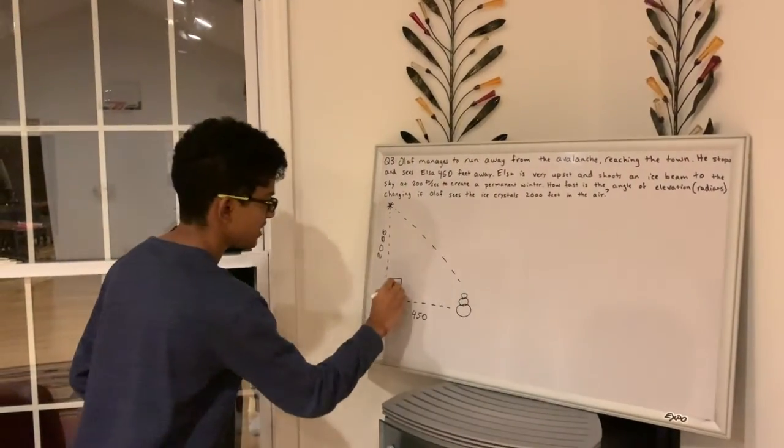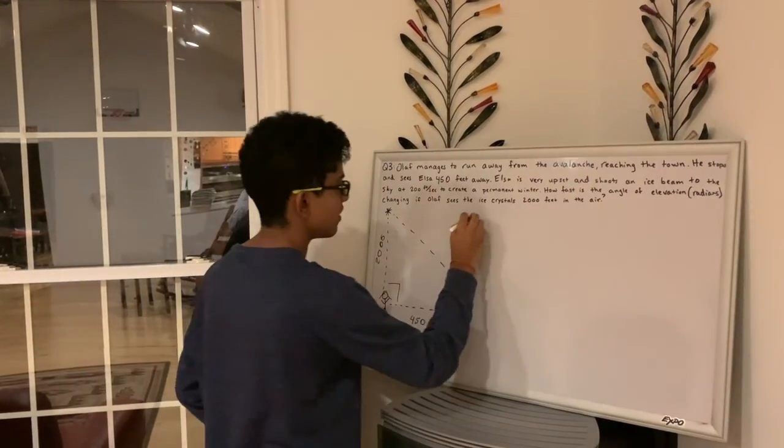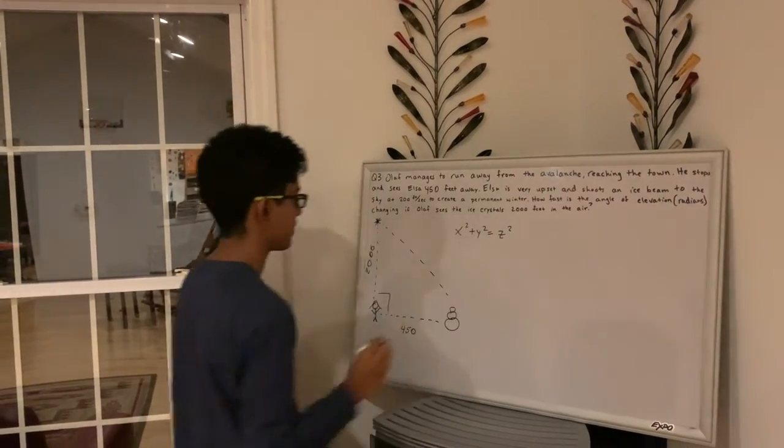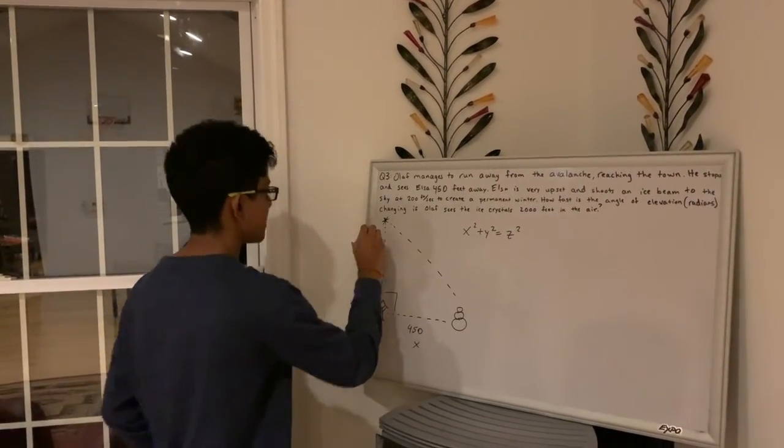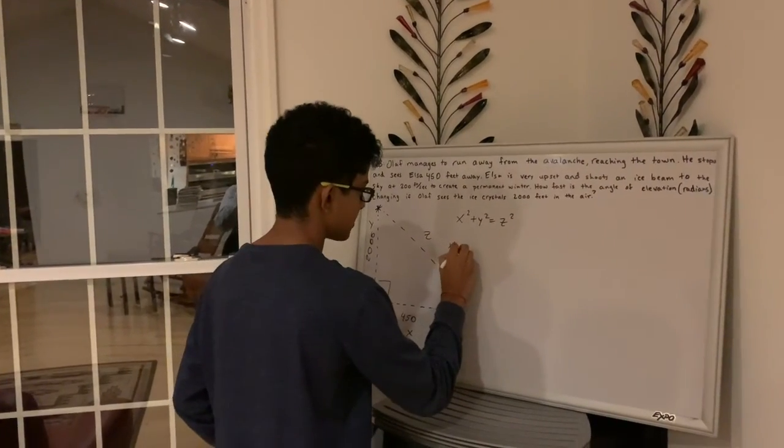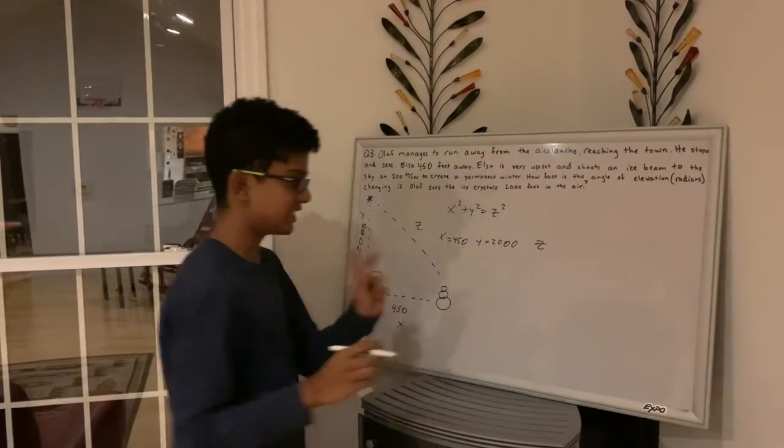So since this is a right triangle, we can use the Pythagorean theorem to find this, the length of this side. x squared plus y squared equals z squared. So this we can mark as x, this is y, and this is z. So x equals 450, y equals 2000, and we do not know what z is.